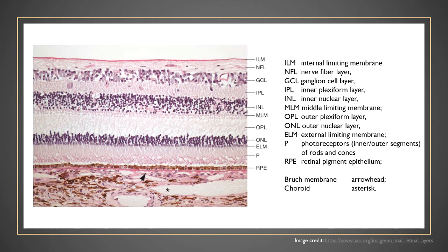Shown here is a histological cross-section of the retina, with the inner aspect at the top of the image and the outer aspect near the bottom. The photoreceptors labeled by P are near the bottom, in the deepest layers of the retina. The star denotes the choroid, a plexus of blood vessels between the retina and the sclera that supply the outer aspects of the retina, such as the photoreceptors. The retinal blood vessels supply the inner aspect of the retina.